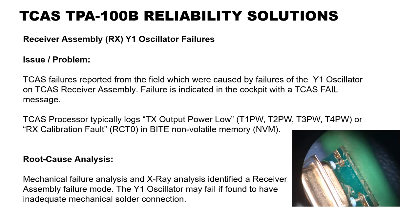Receiver Assembly Y1 Oscillator Failures: The problem reported was TCAS failures from the field caused by failures of the Y1 oscillator on the TCAS receiver assembly. Failures are indicated in the cockpit with a TCAS fail message. The TCAS processor typically logs TX output power low — T1PW, T2PW, T3PW, or T4PW — or RX calibration fault (RCTO) in byte NVM (non-volatile memory).